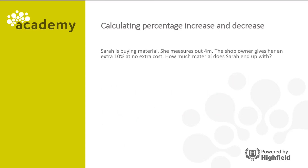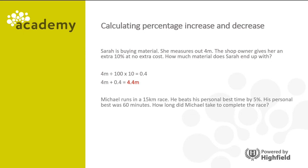Sarah is buying material — she measures out 4 meters and the shop owner gives her an extra 10% at no extra cost. 4 divided by 100 times 10 equals 0.4, then 0.4 plus 4 equals 4.4 meters. Michael runs a 15 kilometer race and beats his personal best of 60 minutes by 5%. 60 divided by 100 times 5 equals 3, so 60 minus 3 equals 57 minutes — Michael's new personal best.